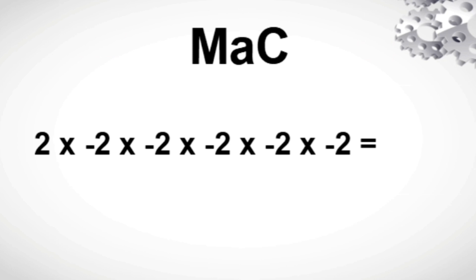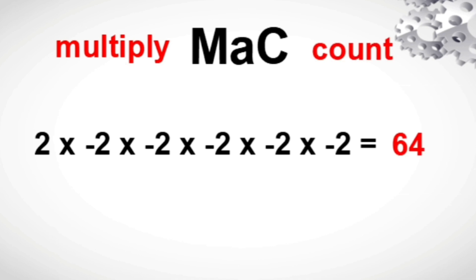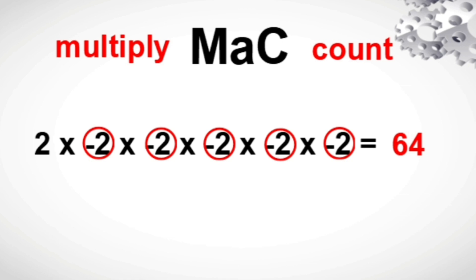For our last example we have 2 times negative 2 times negative 2 times negative 2 times negative 2 times negative 2 times negative 2. First, multiply: 2 times 2 is 4, times 2 is 8, times 2 is 16, times 2 is 32, times 2 is 64. Next, count the number of negative integers — we have 1, 2, 3, 4, and 5. Since we have an odd number of negative integers, our answer must be a negative integer. Therefore our final answer is negative 64.